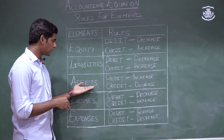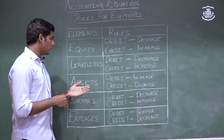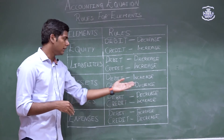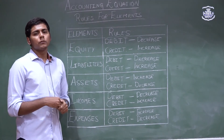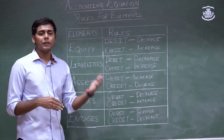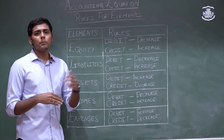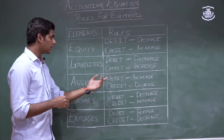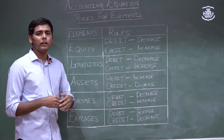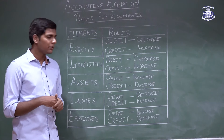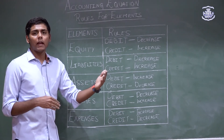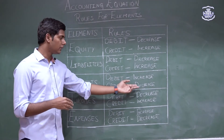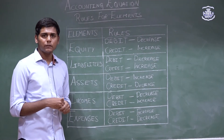For assets, the rule is debit when it increases and credit when it decreases. Take the example of purchasing furniture for cash: when you purchase furniture, the value of furniture increases, so as the rule states, we debit furniture. And as we are paying cash, the value of cash decreases, so we credit cash to record the decrease.